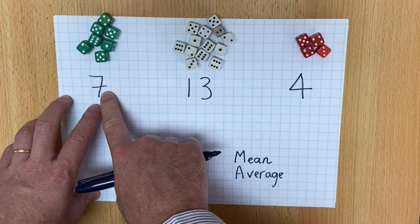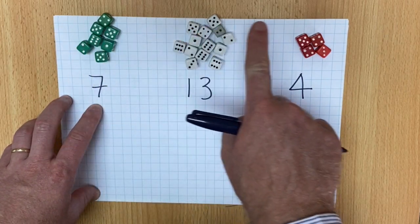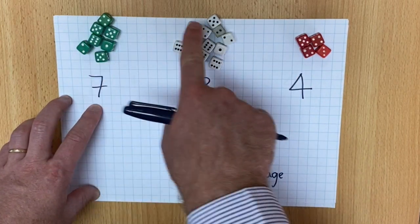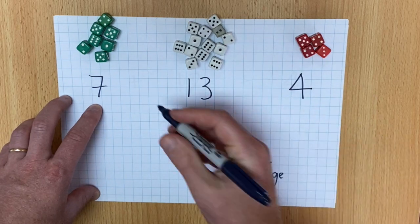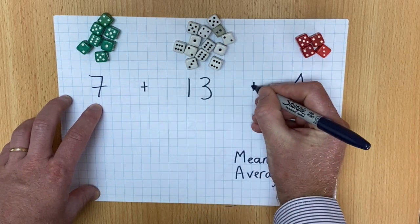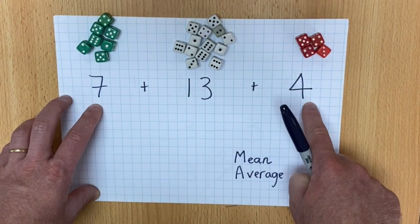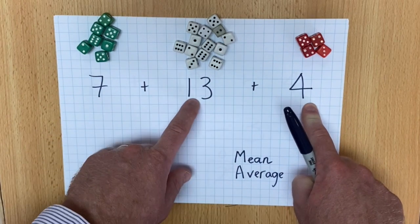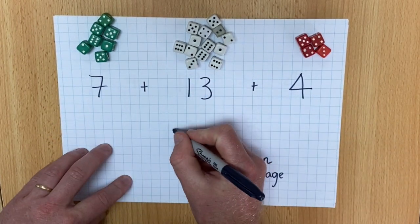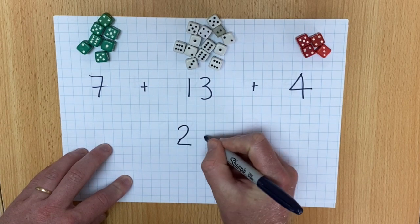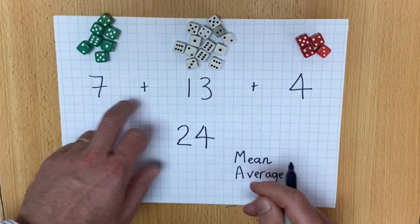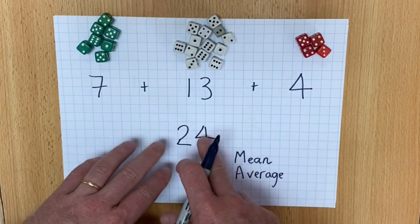So I hope you can see that I've got one, two, three groups and I've added up how many is in each group. Now I need to add these three totals together. Seven add thirteen is twenty, add four makes... sorry, twenty-four. So seven add thirteen is twenty, add four is twenty-four.